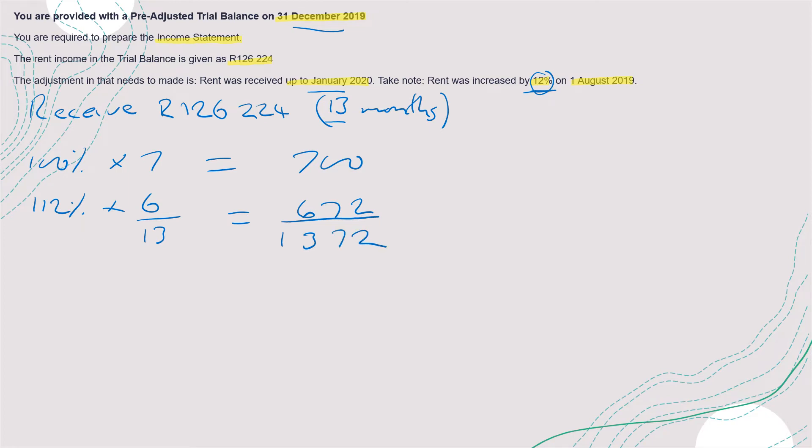So what you are concerned about here is this amount - that's the figure that you are concerned about. So at the end of the day, we need to use that. That would be 672 divided by 1372 times 126,224.